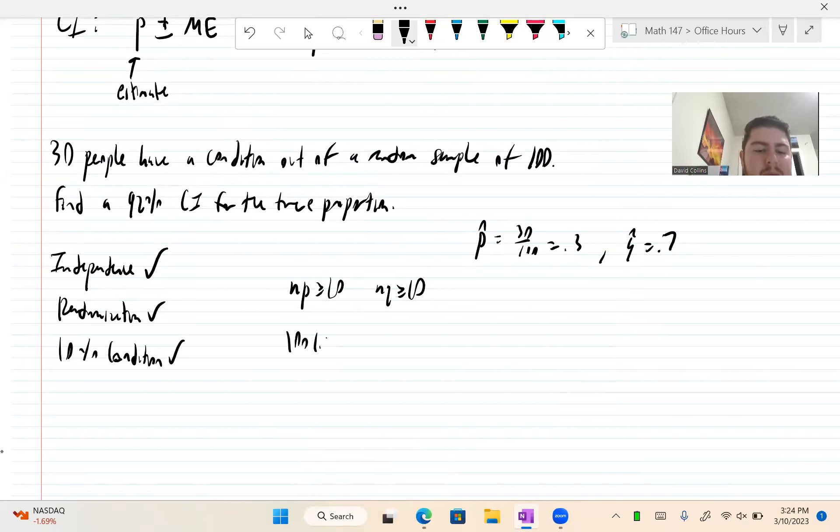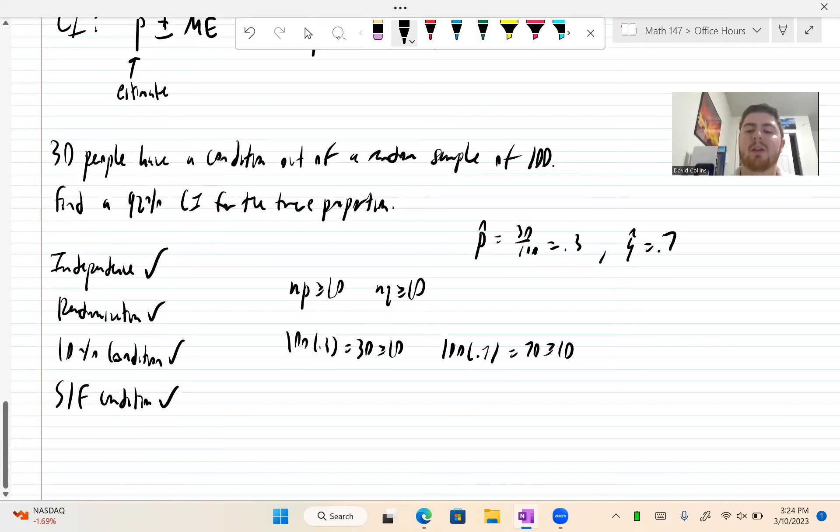The one we need to check is NP is greater than or equal to 10, and NQ is greater than or equal to 10. Now our p-hat is 30 over 100, that's 0.3. So our q-hat is 1 minus that is 0.7. So 100 times 0.3 is 30, it's obviously greater than or equal to 10. And then 100 times 0.7 is equal to 70 is greater than or equal to 10. So our success-failure condition is also true.